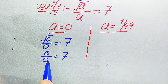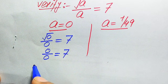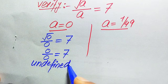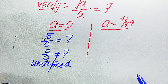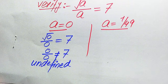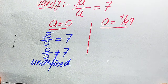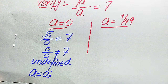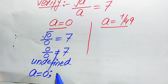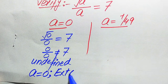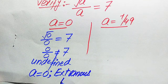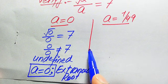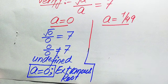The form 0 over 0 is indeterminate, or in other words undefined. Since it is undefined, this is not equal to 7. Therefore a equals 0 does not satisfy the given equation, which means a equals 0 is an extraneous root of the given equation.